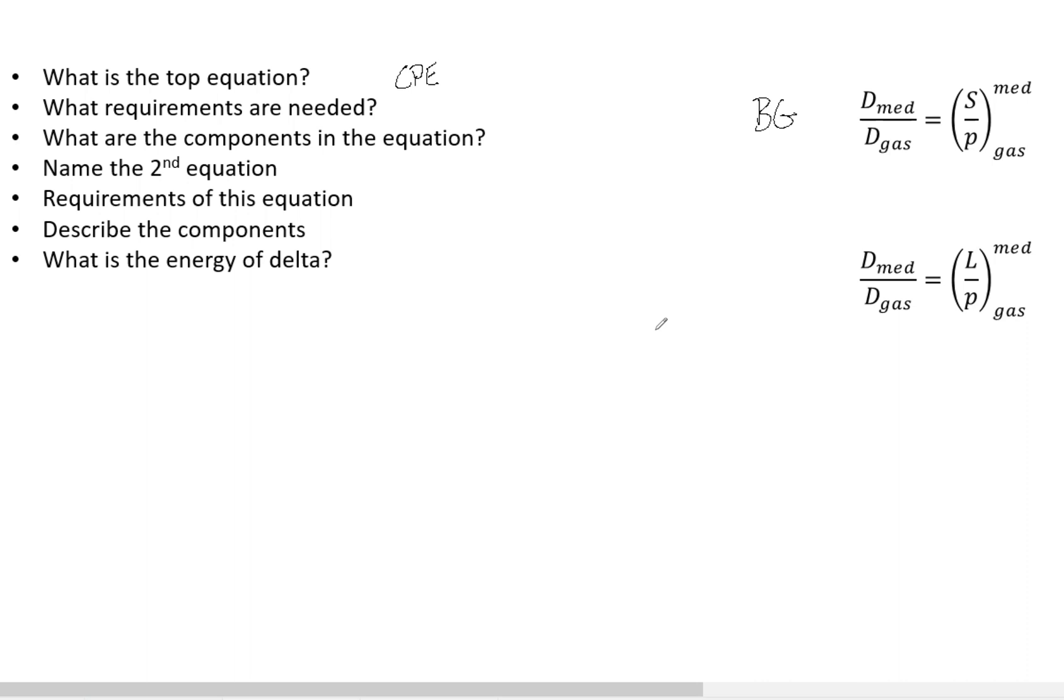Understand that this is unrealistic because now the Bragg-Gray theory tells us that we need both a large and a small cavity so that you can't have that, which is one of the issues with the Bragg-Gray theory here.